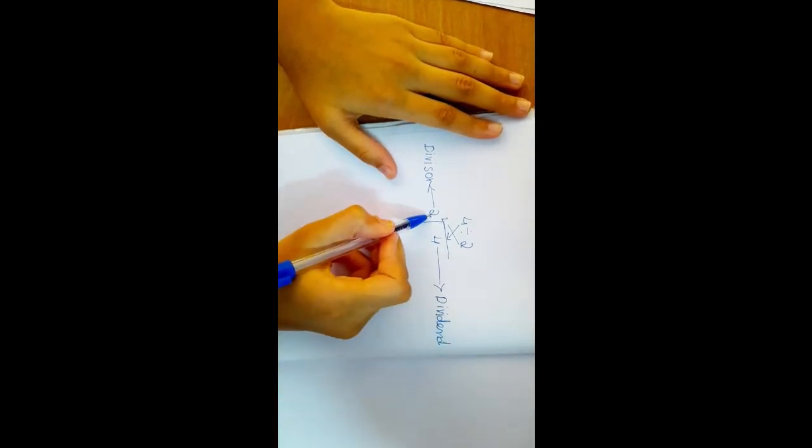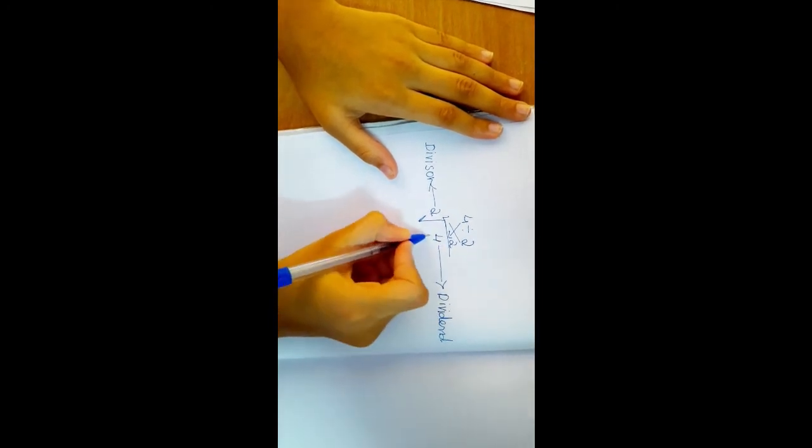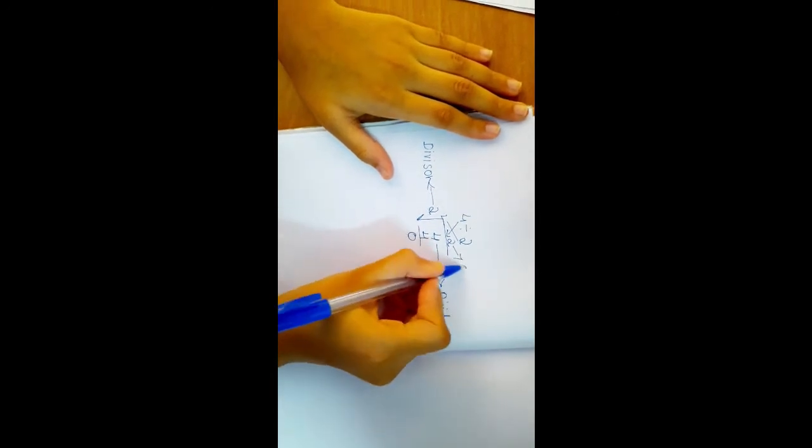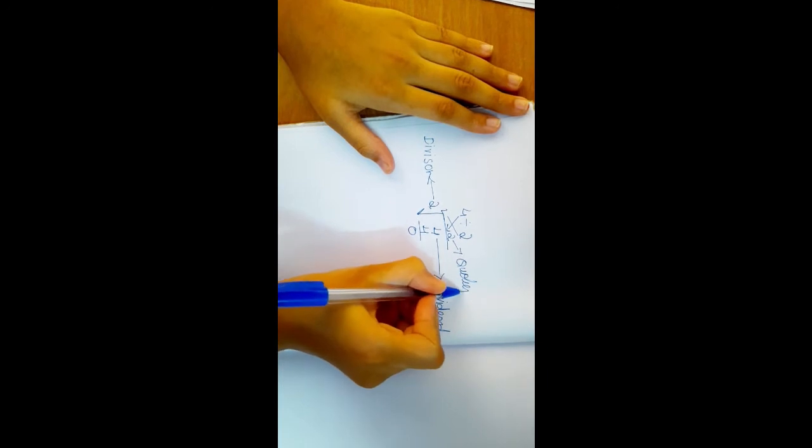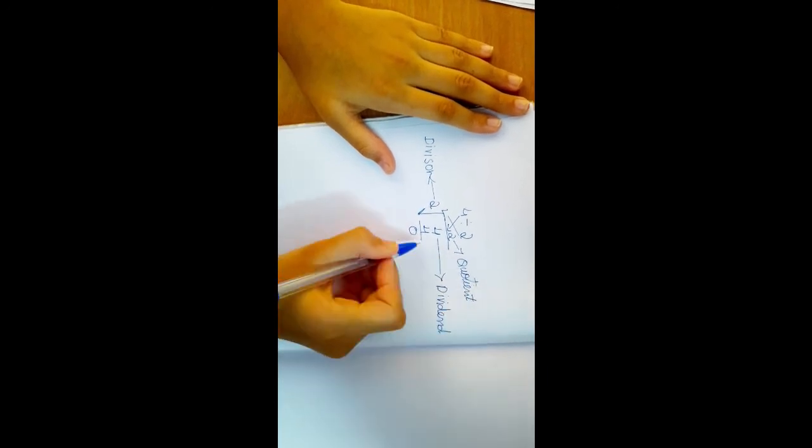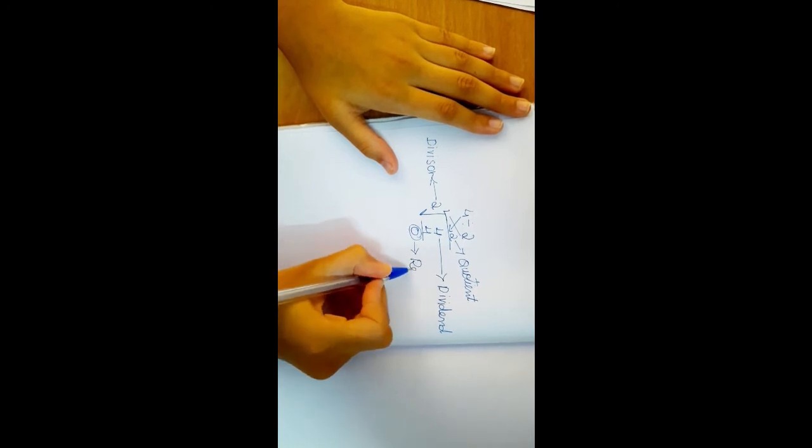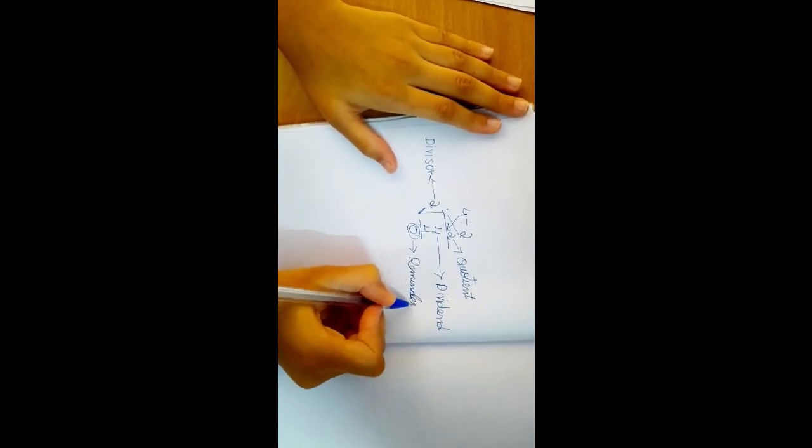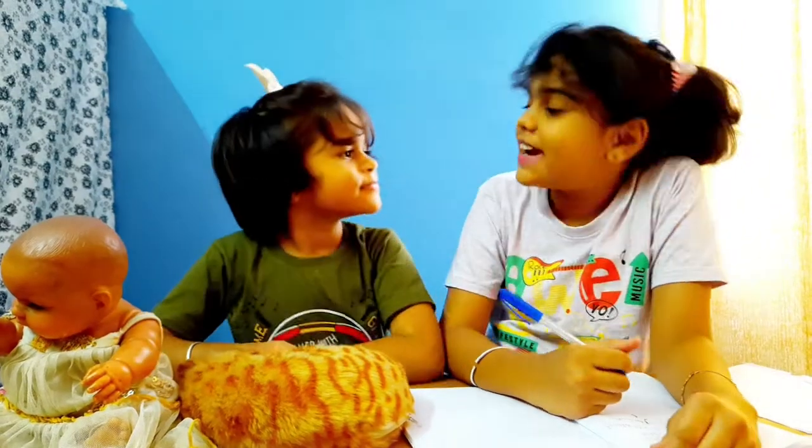2 ones are 2, 2 twos are 4. So, we will write 2 here and 4 down here. And the answer is zero. This is quotient. And this is reminder. You understand, Alina?